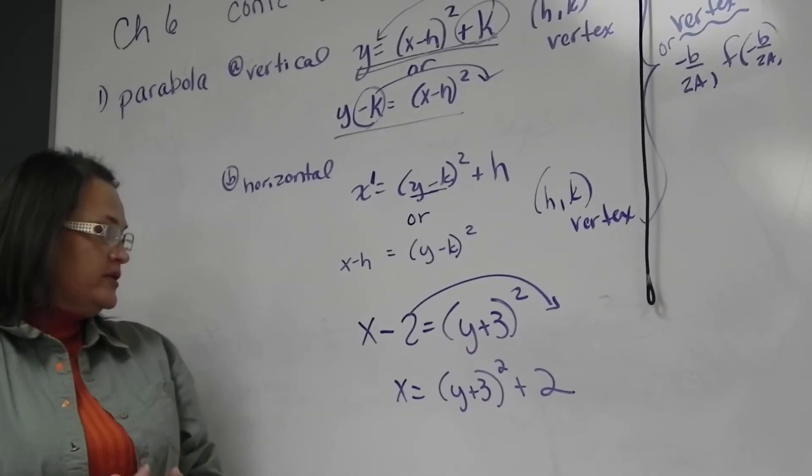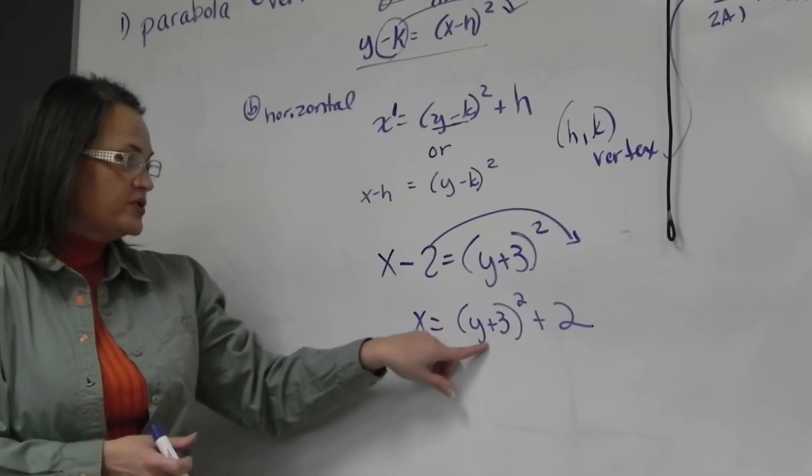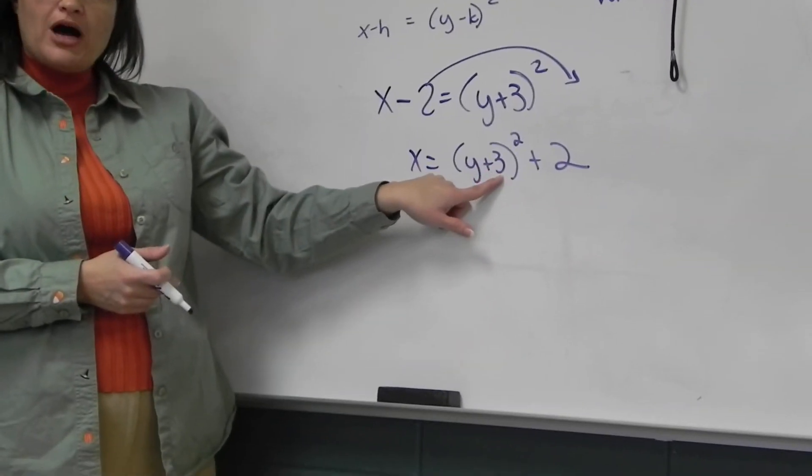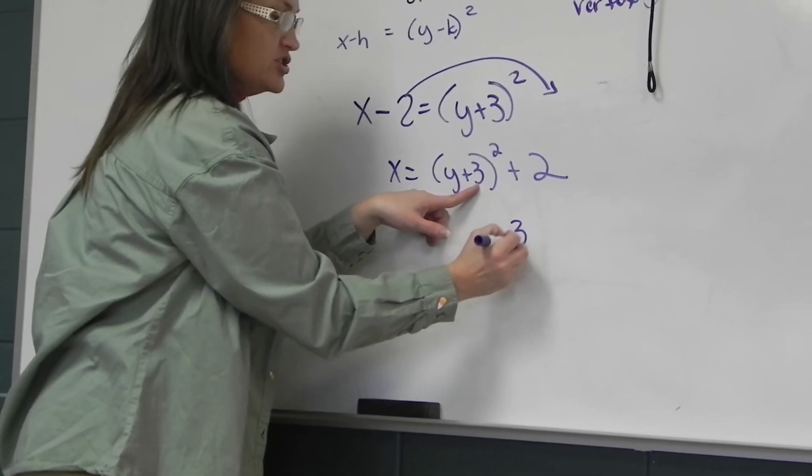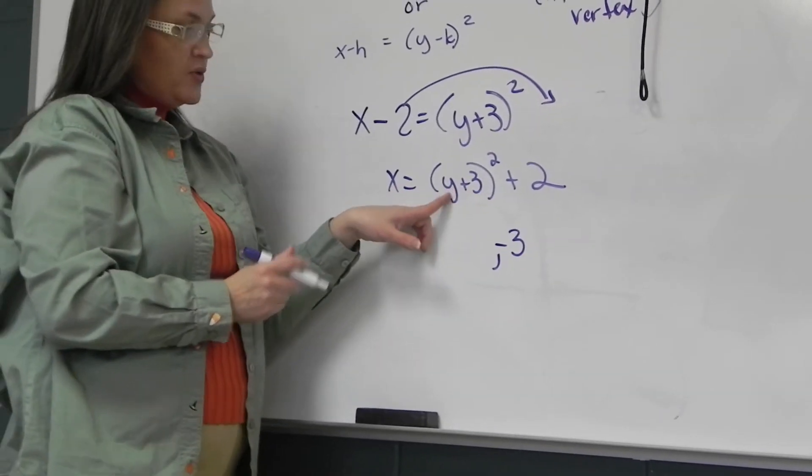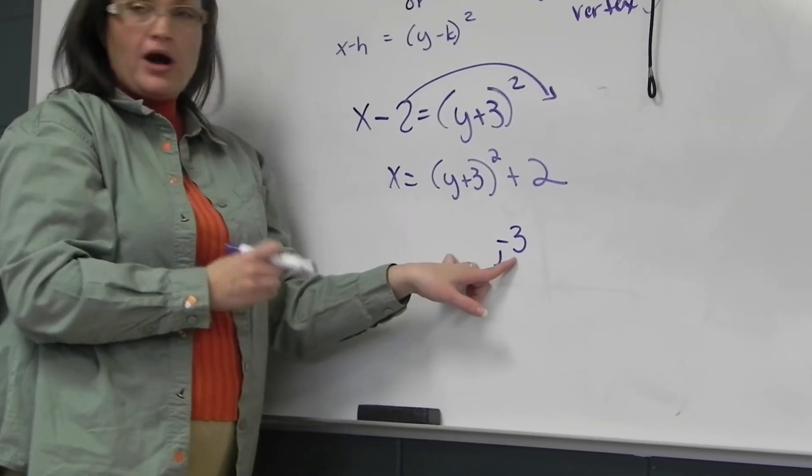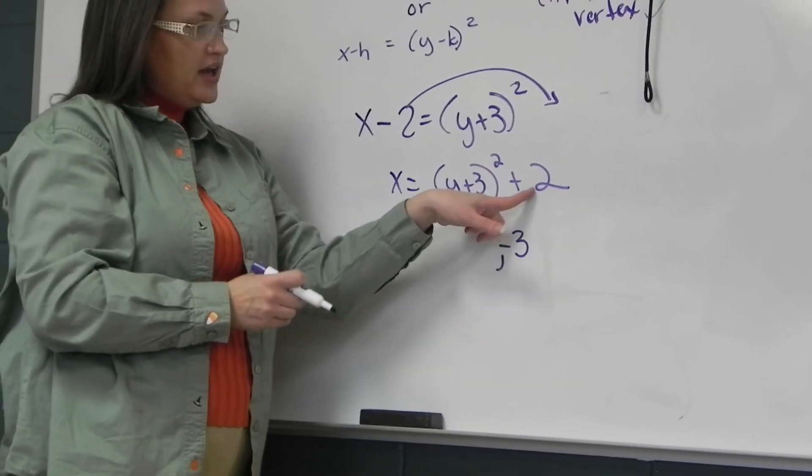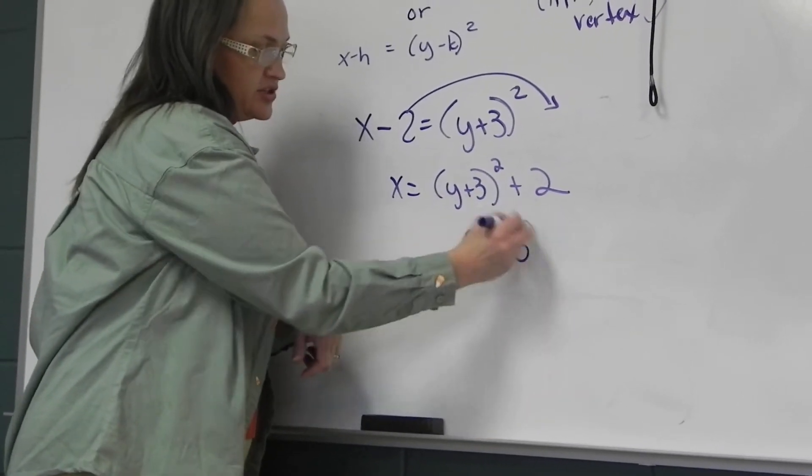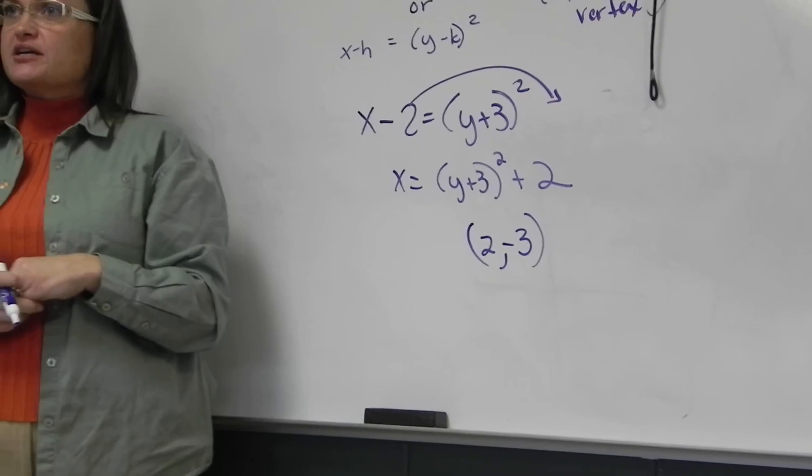Then I would determine that because this is grouped with the Y, that that is the Y shift, it's in parenthesis, so I change it to a negative 3. Again, because it's grouped on Y, Y shift, negative 3. And then this, do not change the sign. The sign is 2. So that would be the vertex of your parabola.